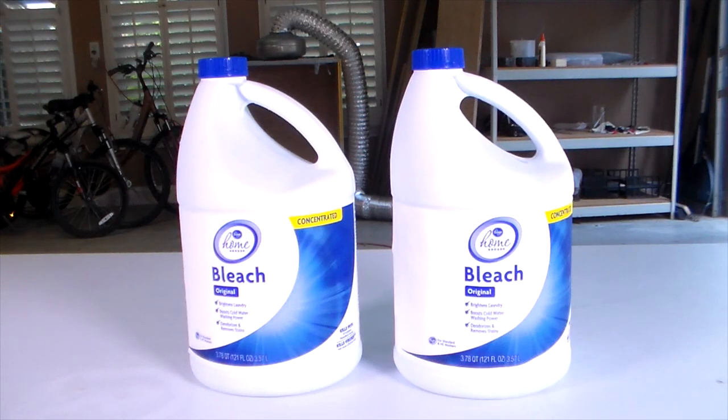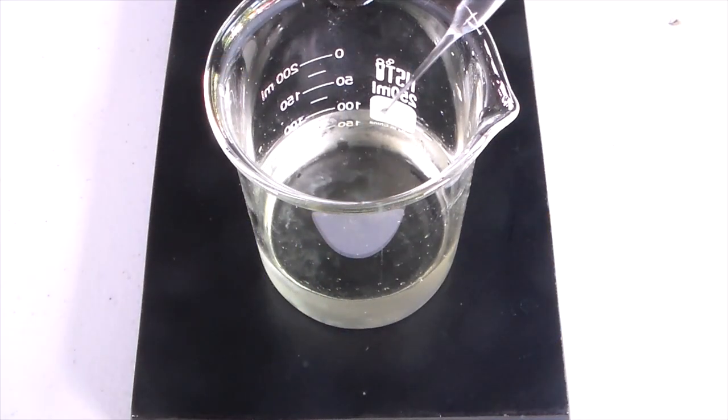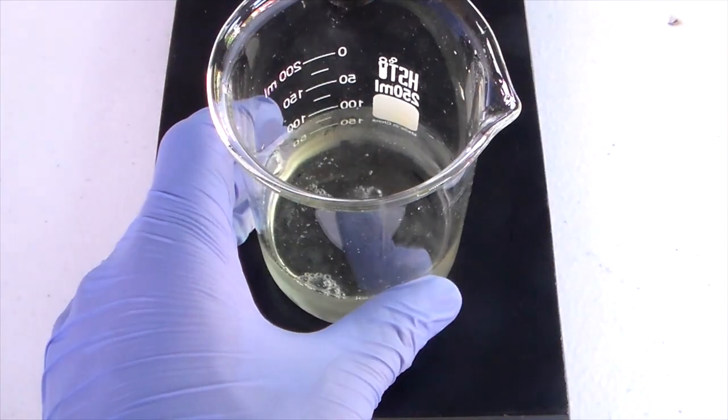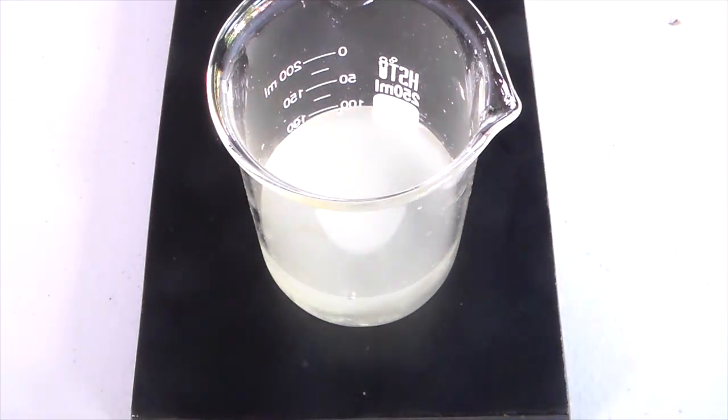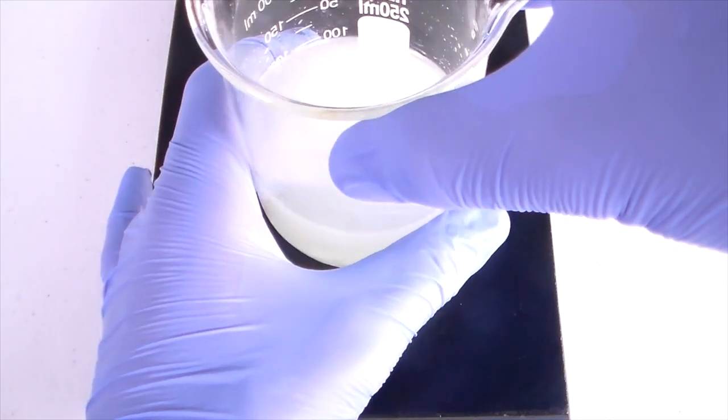The remaining bleach will give us a 5% excess of sodium hypochlorite, assuming the concentration of the bleach is actually 8.25%, which is what is listed on the label. Excess sodium hypochlorite will ensure that all the acetone reacts, because acetone will be very difficult to remove from our chloroform product.